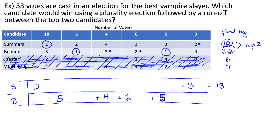Adding everything up, Summers has 13 votes and Belmont ends up with 20 votes, so Belmont wins the runoff. To check our work, we add 13 and 20, which equals 33 — the total number of votes cast in this election. Always verify your tallies add up to the correct total.